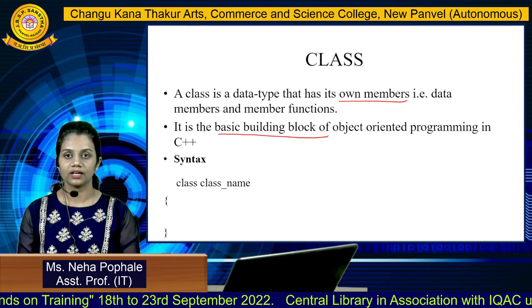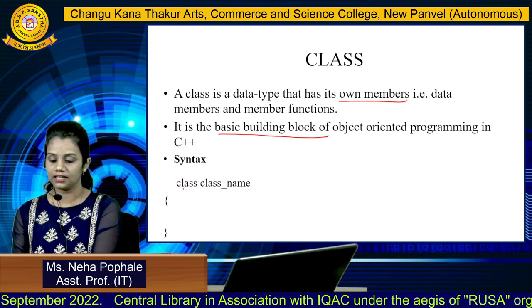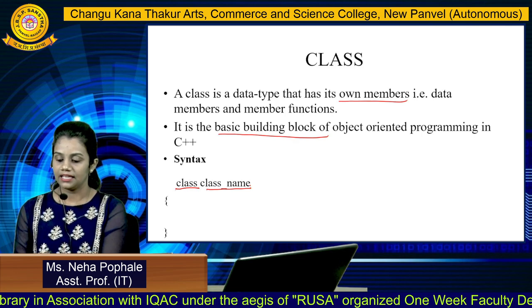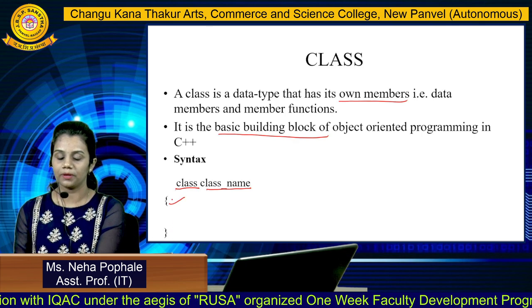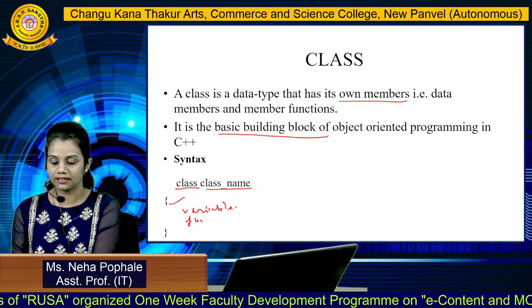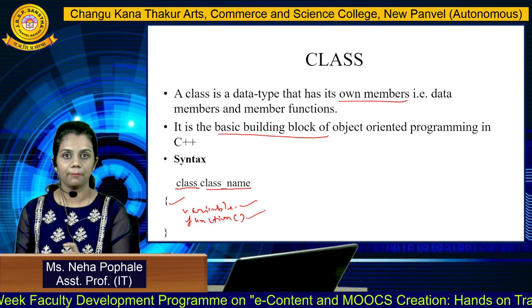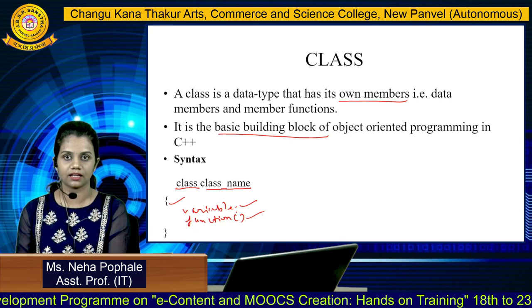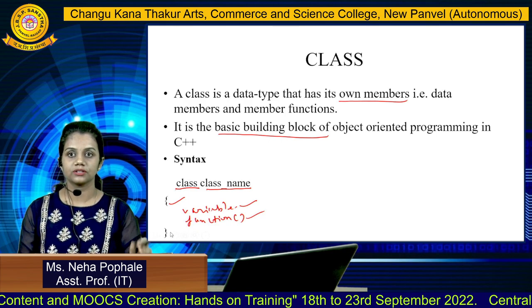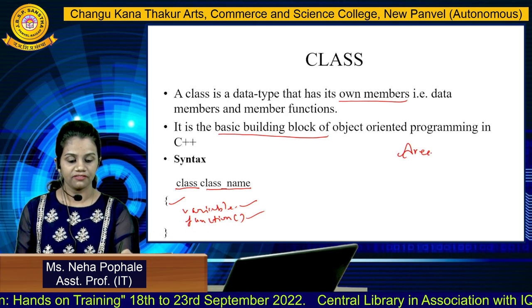Now we will see how to create a class. We have to follow a specific syntax. You should create a class with the keyword 'class', then write the class name, then write the body of the class opening with curly braces. Write all the variables and functions or methods required in the class. After declaration or definition of variables and functions, close the class with the closing bracket. Let's see an example — suppose you are told to write a program for calculating the area of a circle.